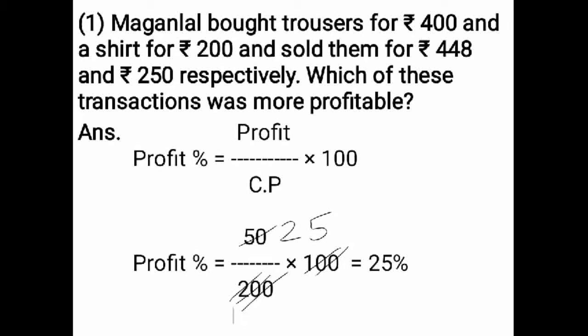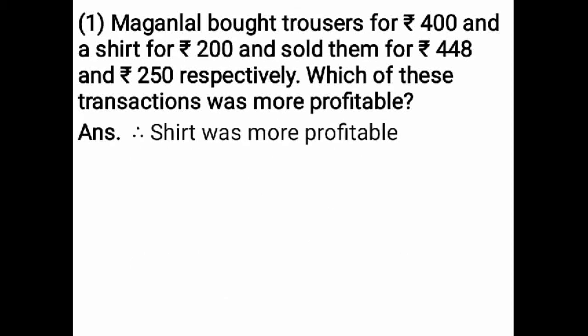The main question asks: which of these transactions was more profitable? Compare the profit percent between trousers and shirt. Profit percent of trousers is 12% and profit percent of shirt is 25%. So the shirt is more profitable. Therefore, the shirt was more profitable.